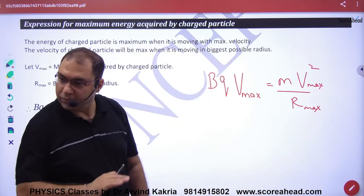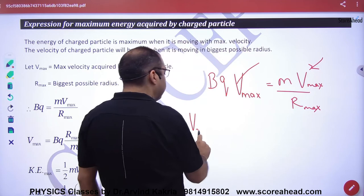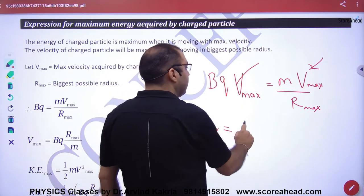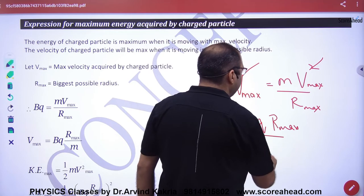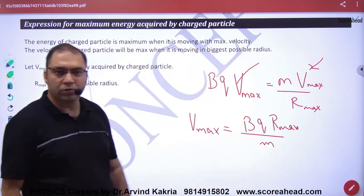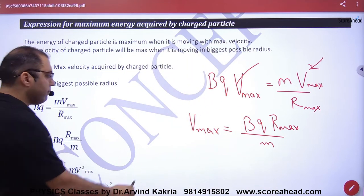V_max can be calculated. So v_max value will be Bq*r_max divided by mass m. So maximum kinetic energy, maximum kinetic energy...